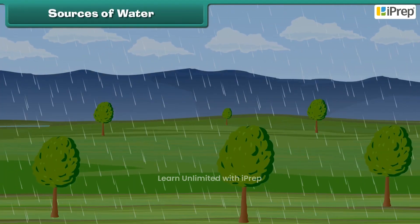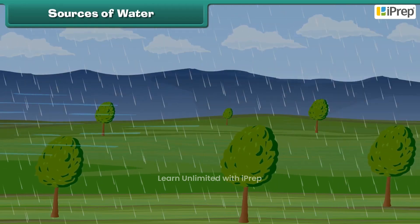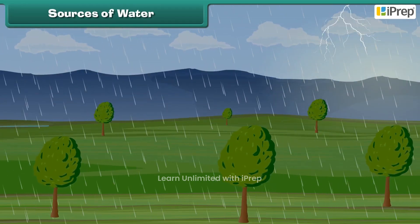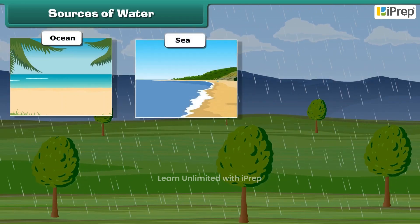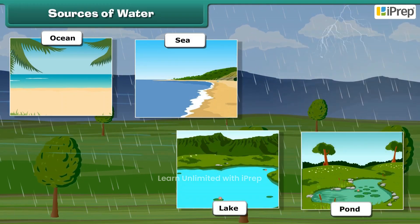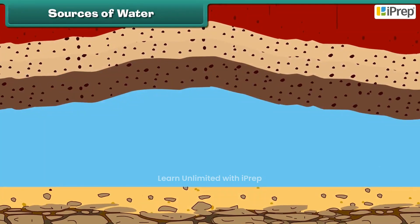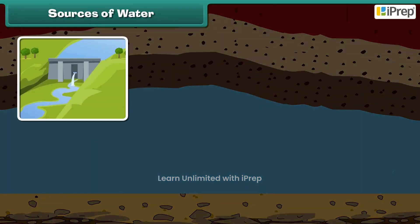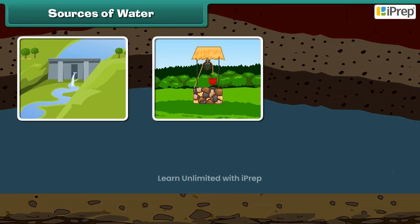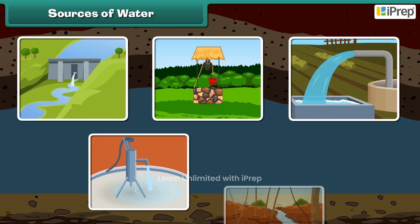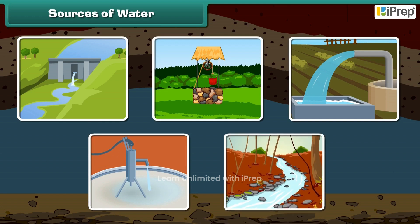Water falls from the sky as rain and fills up oceans, seas, lakes and ponds. It is also found deep under the ground. Dams, wells, tube wells, hand pumps and canals are man-made resources of water.